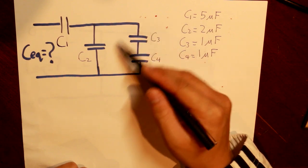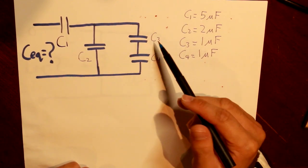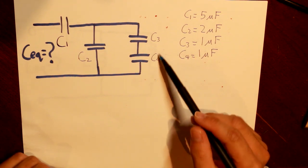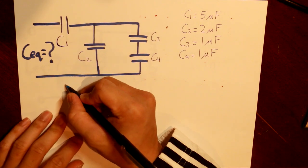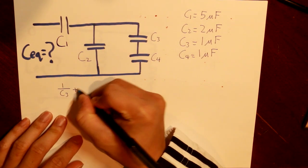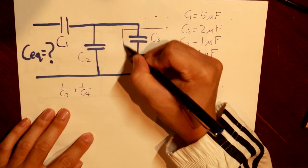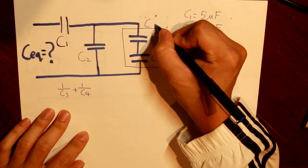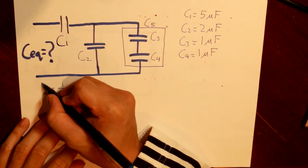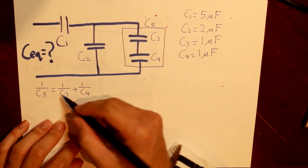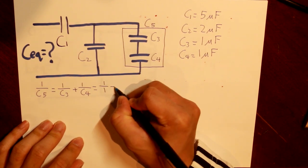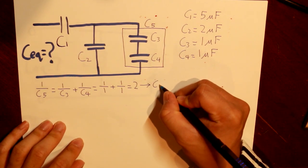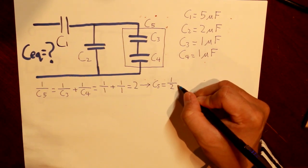First, let's calculate C3 and C4, which are in series. Using the series capacitance formula: 1/C3 + 1/C4 = 1/1 + 1/1 = 2, so C5 = 1/2 microfarads.